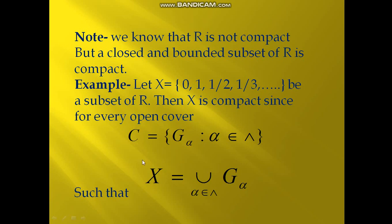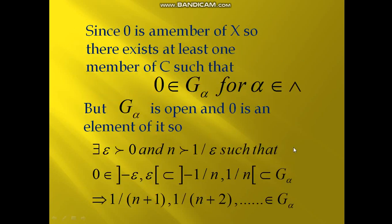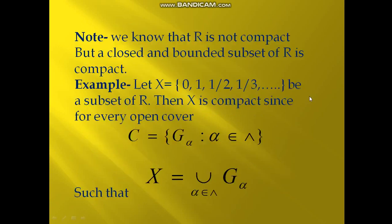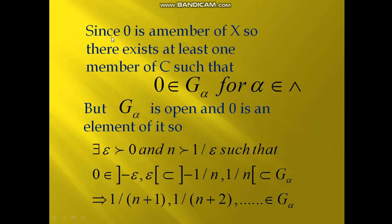Since X = union over α of G_α, and since 0 is a member of X, there exists at least one member of C such that 0 belongs to G_α for some α in the index set. Because 0 is an element of X and X equals the union of G_α, so 0 must belong to at least one member.